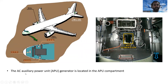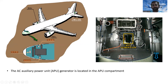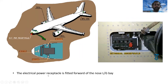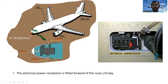The APU generator is located in the APU compartment. The external power electrical receptacle is fitted forward of the nose landing gear — you can see the location of the external power receptacle here.